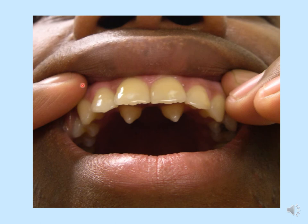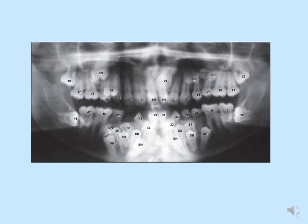Here is a patient with two supernumerary teeth present on the palatal aspect behind the maxillary central incisors. This radiograph from Google Images shows multiple supernumerary teeth — each labelled SN — and counting them reveals 12 supernumerary teeth in total. Quite an unusual case, but possible.